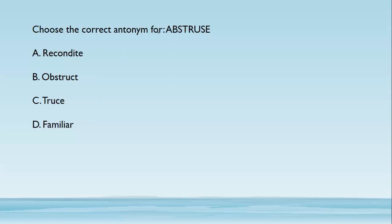Choose the correct antonym for 'abstruse.' Abstruse means something which is very little known or very difficult to understand. The antonym is something which can be easily understood or is very well known, so the answer is 'familiar.' 'Recondite' has the same meaning as abstruse — very little understood or difficult to understand — making it a synonym.